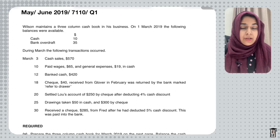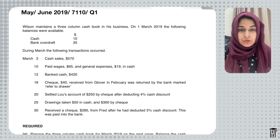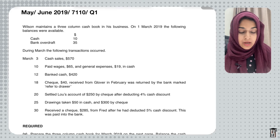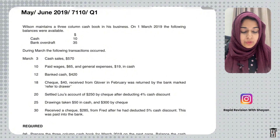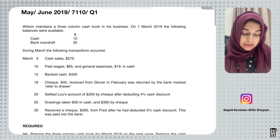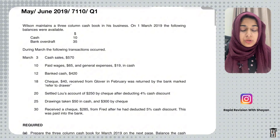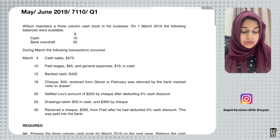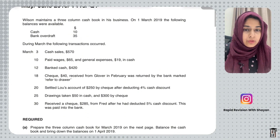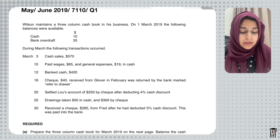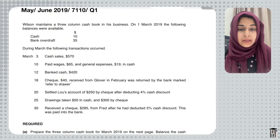Hi guys, today I'm going to solve a question on cashbooks. This question is taken from May/June 2019. The previous course code for O-level accounting was 7110, and usually the cashbook questions come as question number one of the paper.